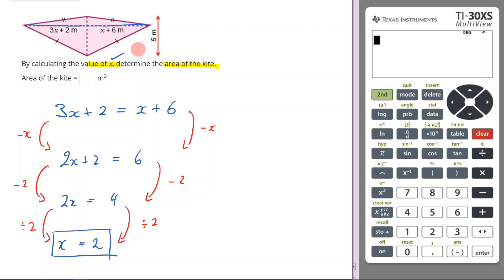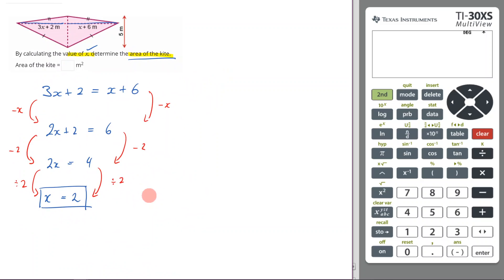Okay, so I've done the first part of this question: determine the value of x. Now it says find the area of the kite. This is where we need to remember the formula for the area of a kite. If we can think of a kite for a second, remember that's an ugly looking kite, but let's just pretend it looks good.